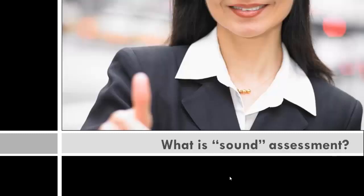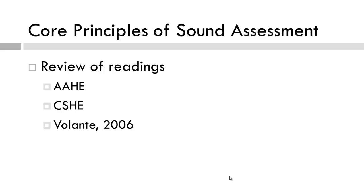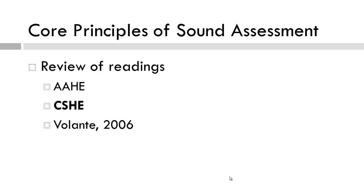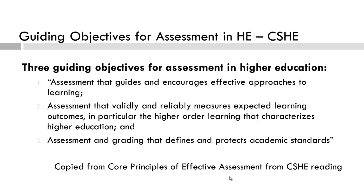Let's take a look at how sound assessment is described. The American Association for Higher Education, the Centre for the Study of Higher Education in Australia, and Volante, a researcher here in Canada, have each put forth some principles for consideration with respect to assessment. This week, you will go to each of the websites and compare and contrast the core principles of each. We will begin with the CSHE — the Centre for the Study of Higher Education in Australia — which offers three guiding objectives for assessment in higher education.